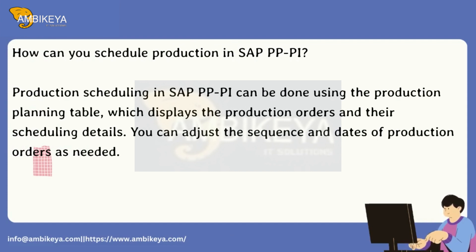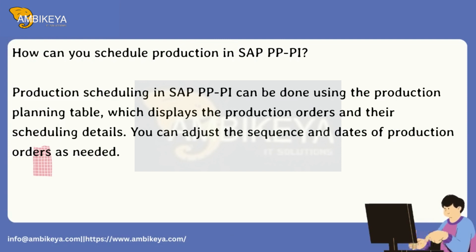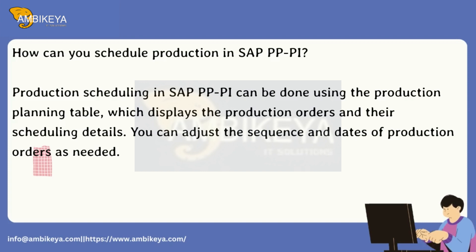How can you schedule production in SAP PP-PI? Production scheduling in SAP PP-PI can be done using the production planning table, which displays the production orders and their scheduling details. You can adjust the sequence and dates of production orders as needed.